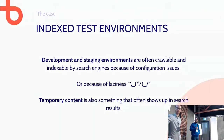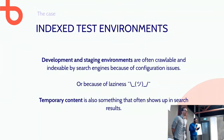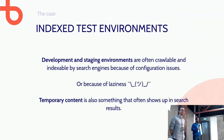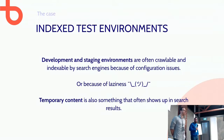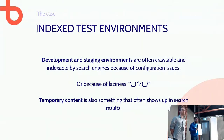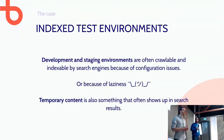Something we see a lot: indexed test or staging environments. In bigger development setups there might be a lot of different environments — a staging environment, a live staging environment, another testing environment. One site can have three, four, or more environments, and you do not want those environments to get indexed by Google.